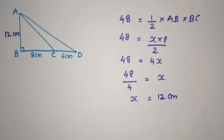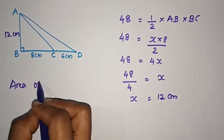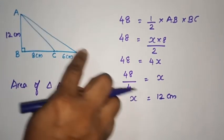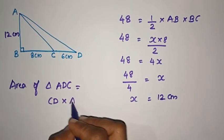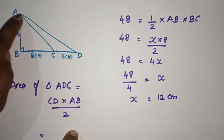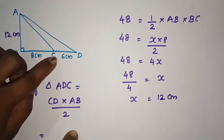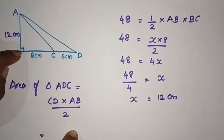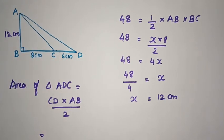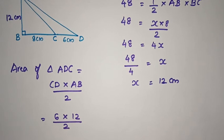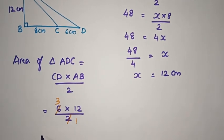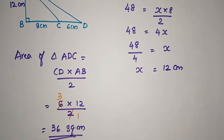Then we find the area of triangle ADC. The formula is: base CD into height AB by 2. The height is perpendicular — that is 12 cm. How do we write CD? CD is 6. So 6 into 12 by 2. We cancel: 2 into 1 and 2 into 3. 12 into 3 is 36 square centimeters. The area of triangle ADC is 36 square centimeters.